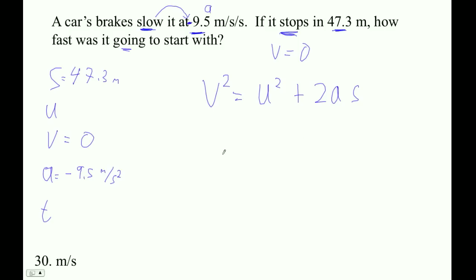That's the one. Okay, so let's see. Zero squared equals u squared plus two times negative 9.5 times 47.3.